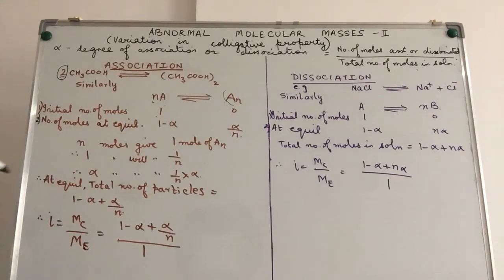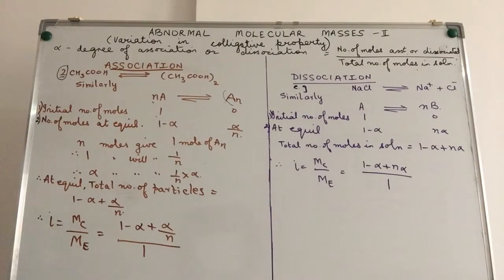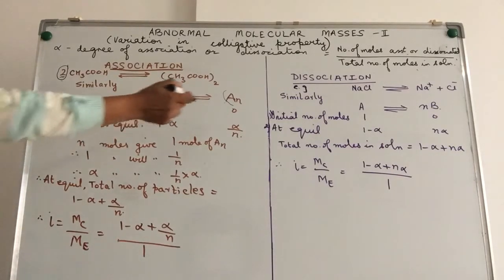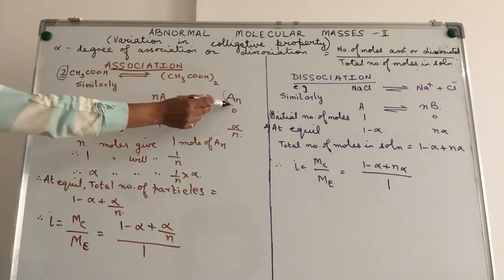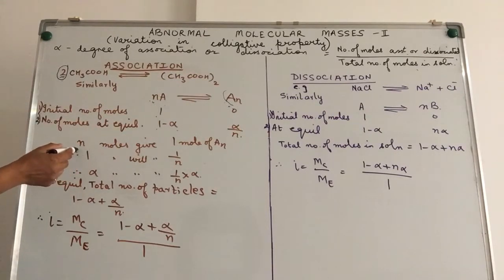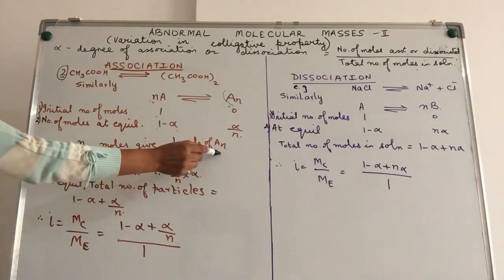At equilibrium, that means after association has taken place and the equilibrium has stabilized, now it is a dynamic equilibrium. In that case, the total number of moles of A left after association where alpha is our degree of association. That means alpha is the number of moles of A which have undergone association to give us An. So, we are left with only 1-α particles of A. n moles of A are giving us one mole of An. Therefore, one mole of A will give us 1/n moles of An.